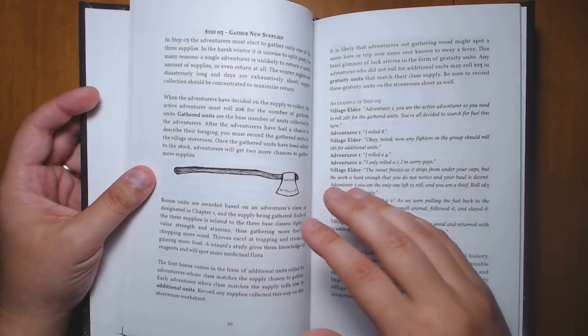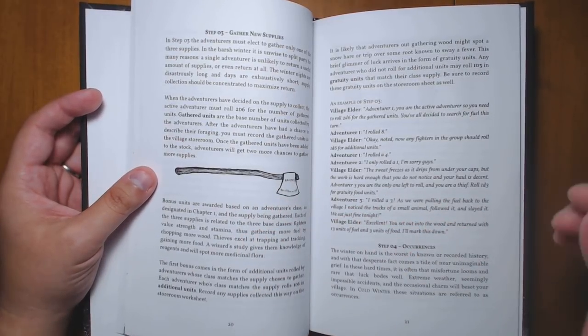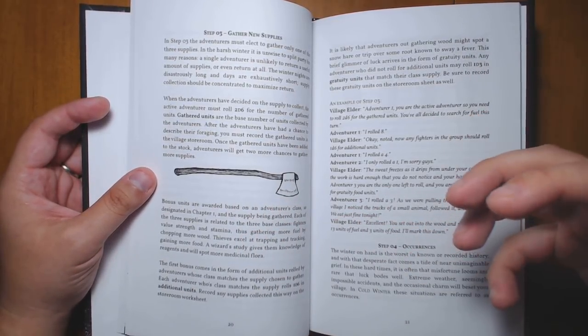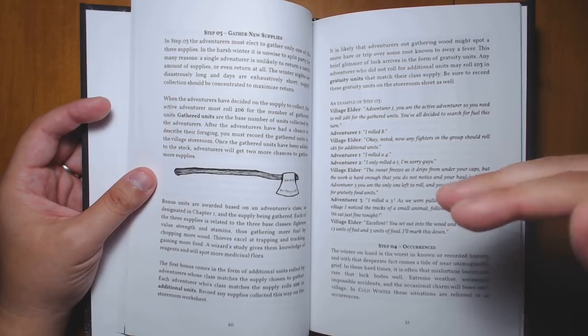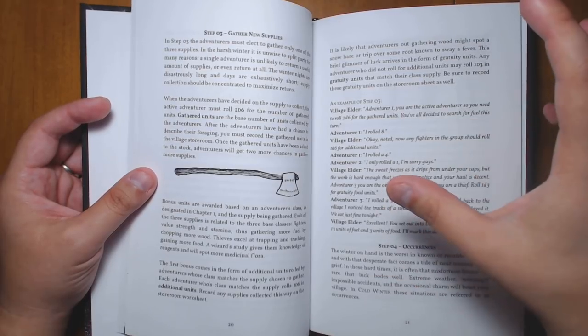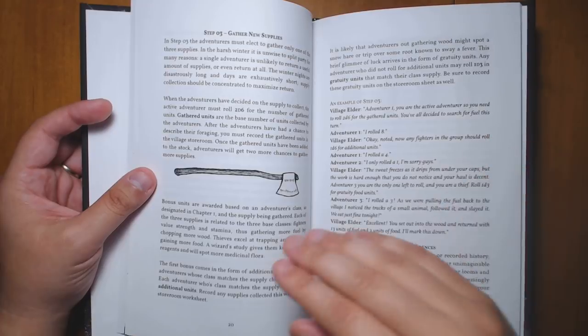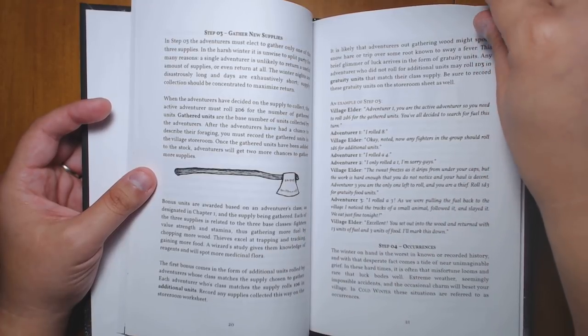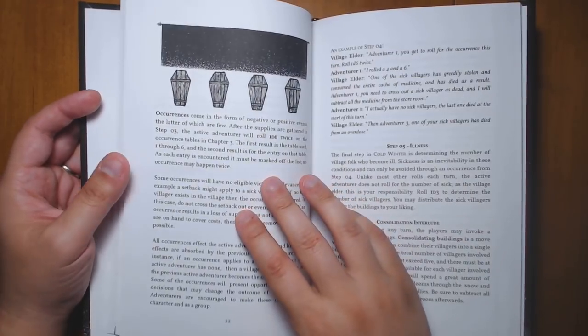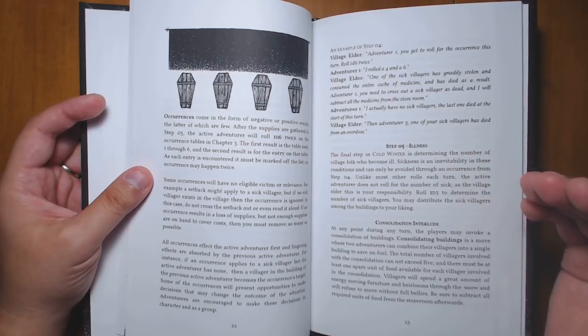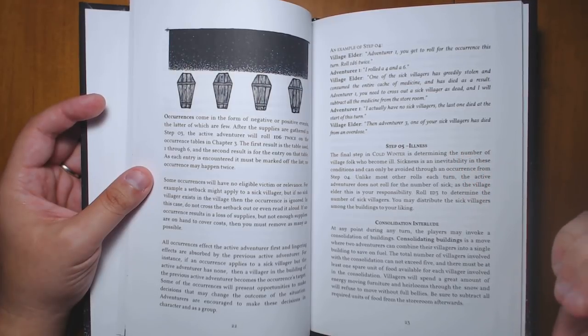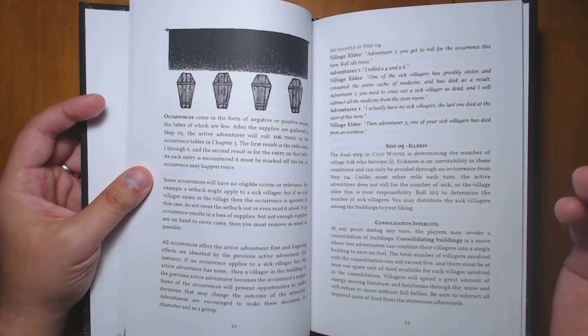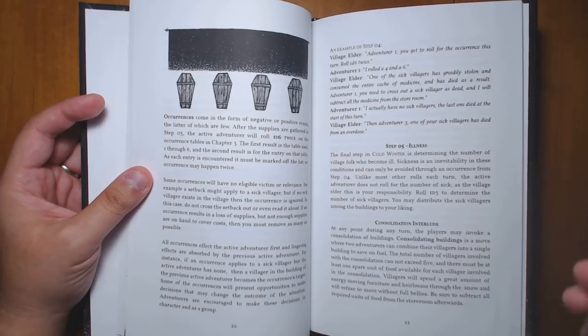And so as a result, what's going to happen is that over the course of the game, you're eventually going to start getting low on a couple different things. But you're going to have to decide to strategically go out and just get one resource. And hopefully you get enough to fill your other needs. For example, during every turn, you're going to roll a die to determine how cold it is. And that's going to determine how much fuel you're going to need. So that's going to vary and it's not going to be predictable.